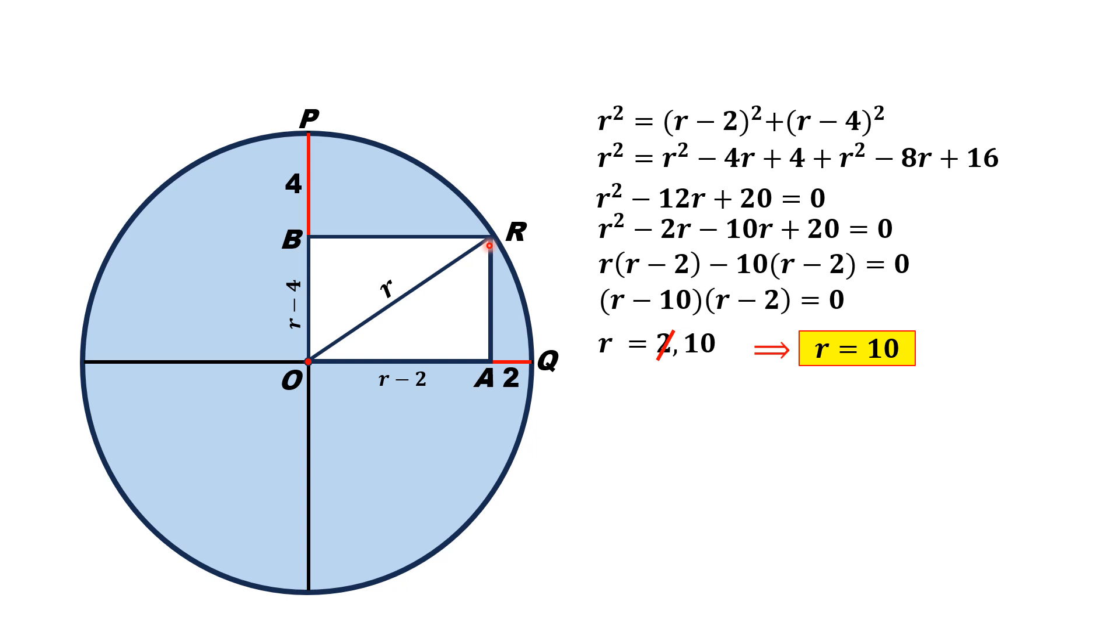So we replace r by 10. Then r - 2 will be equal to 8, and r - 4 will be equal to 6 units.